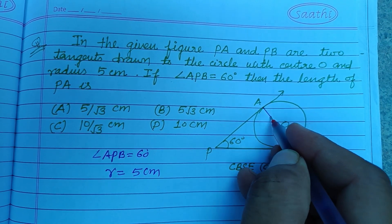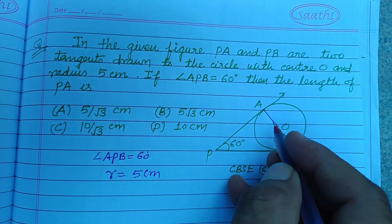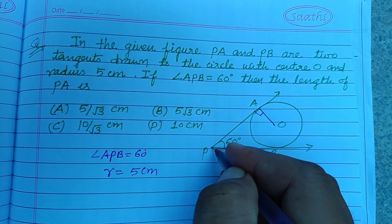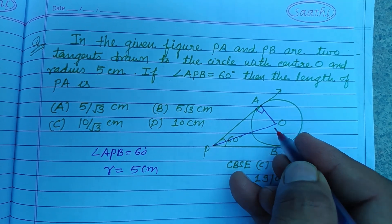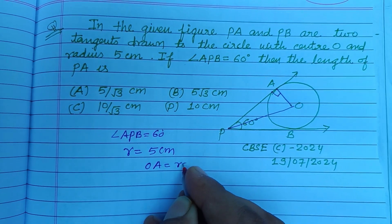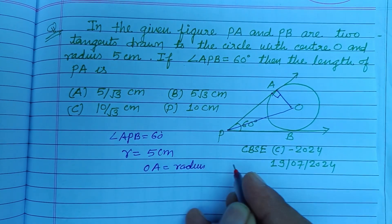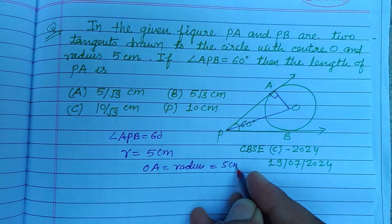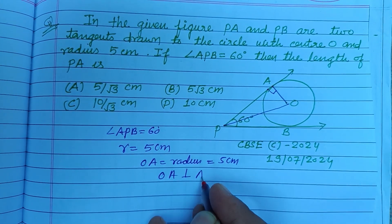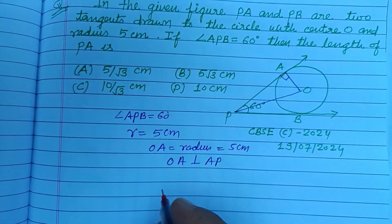So first we draw and join OA which is perpendicular to PA, and I also join OP. So OA equals radius, that is 5 cm given to us. OA perpendicular to AP, okay.